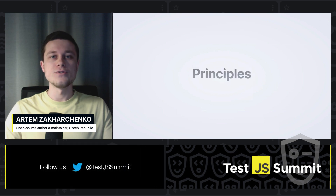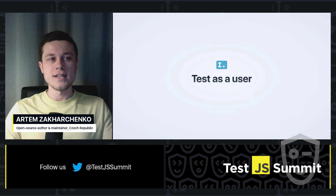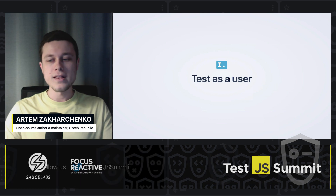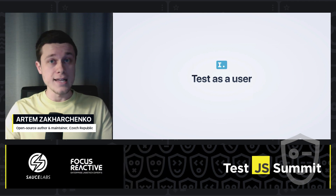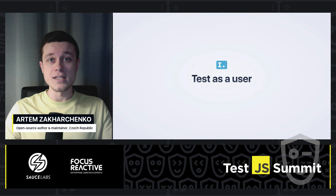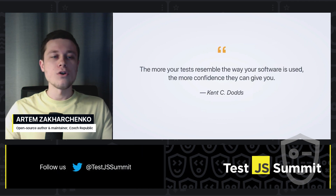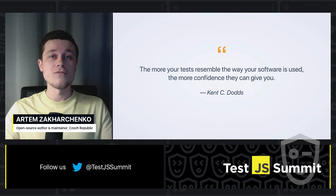The first one is to test as a user. The user here doesn't mean customer necessarily. Of course, if you're having an e-commerce website and you want to double check the success scenarios in different pages, you will be performing user actions there. But let's say you are writing a test for a function or a class — then the user for that class would be another developer. I like this quote by Kent C. Dodds that says, "the more your tests resemble the way your software is used, the more confidence they can give you." I think it summarizes this principle pretty brilliantly.